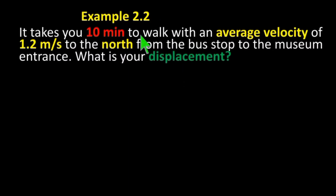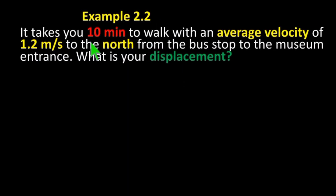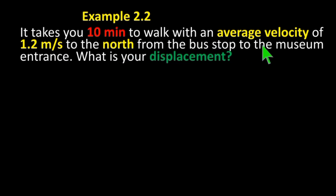Example 2.2: It takes you 10 minutes to walk with an average velocity of 1.2 meters per second to the north, from the bus stop to the museum entrance. What is your displacement?